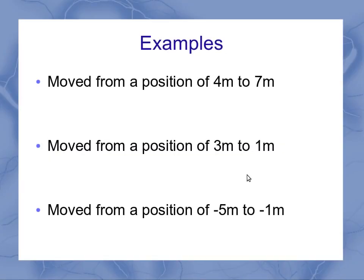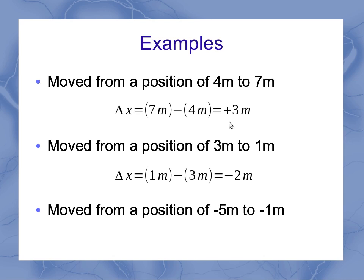So let's look at these examples. These are the same ones that I showed graphically with my arrows. If I move from a position of 4 meters to a position of 7 meters, then my final position is 7 meters, my initial position was 4 meters. And the displacement is calculated by 7 meters minus 4 meters, giving me a displacement of positive 3 meters.